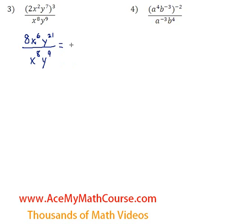So we have the 8. Now x to the power of 6 over x to the power of 8 is just equivalent to x to the power of 6 minus 8. And over here we can do the same thing with the y: 21 minus 9 for the exponent.